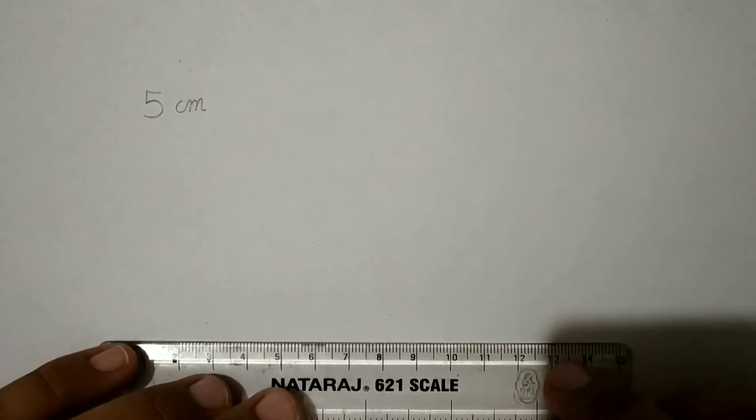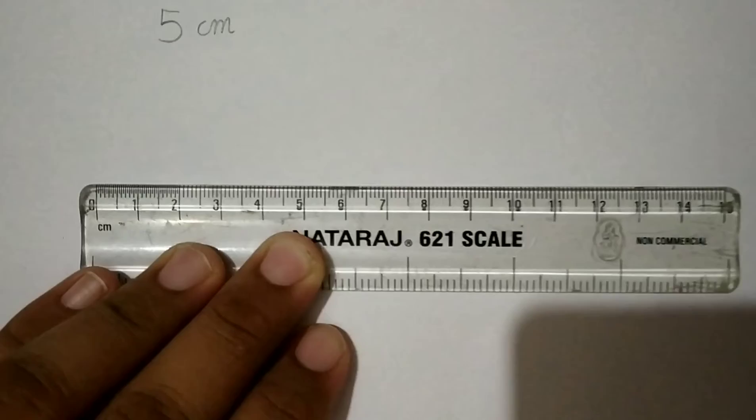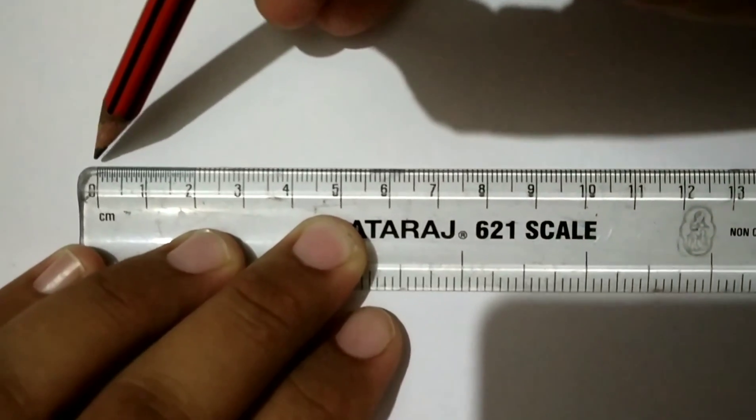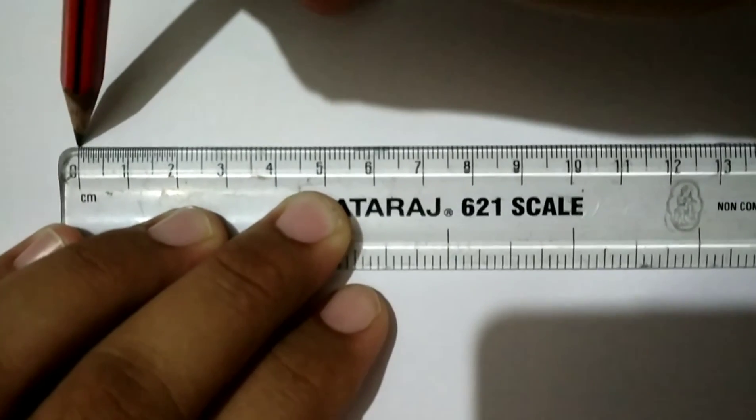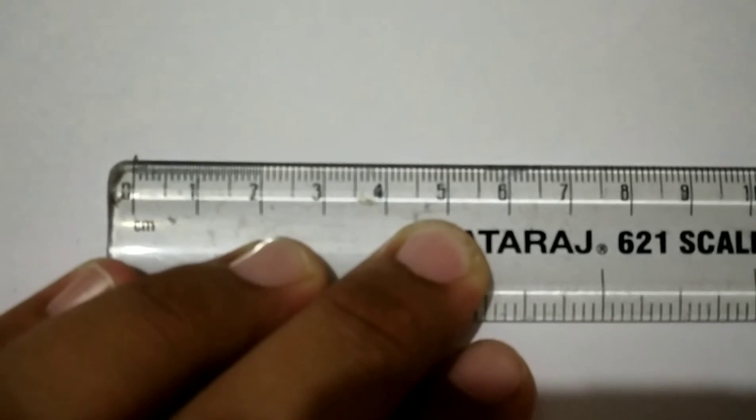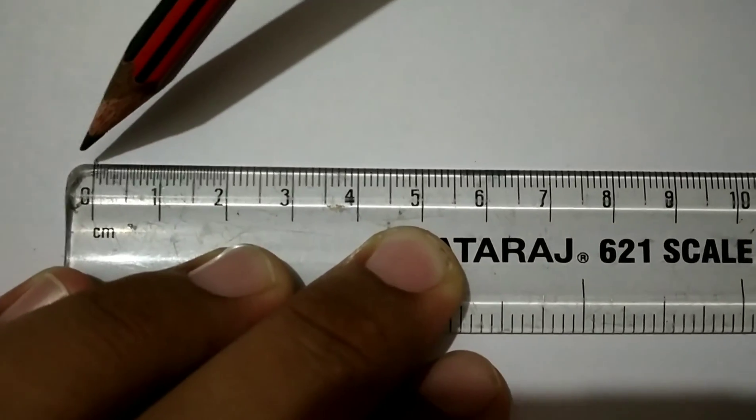Let us draw another line segment measuring 5 centimeters. We will take the ruler and mark a point at 0 on the scale. Now we have to draw a line segment of length 5 centimeters, so we will count 5 long divisions after 0.